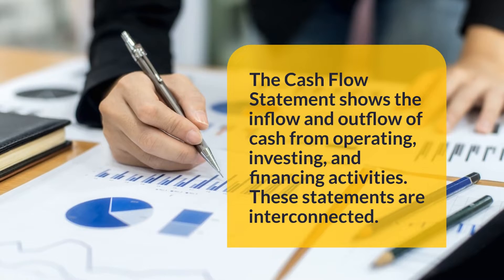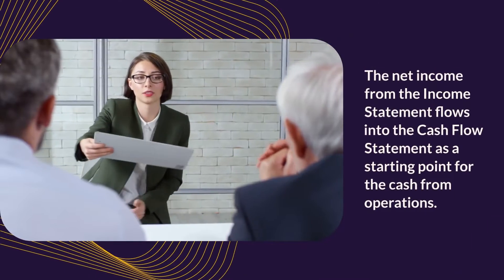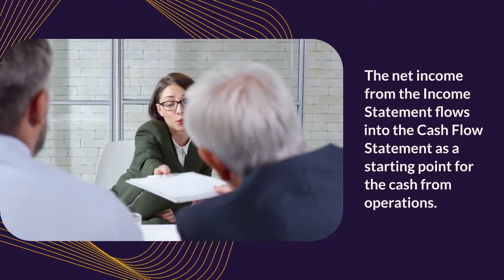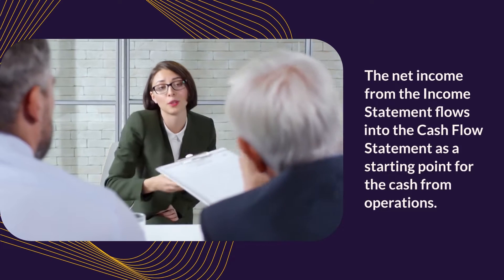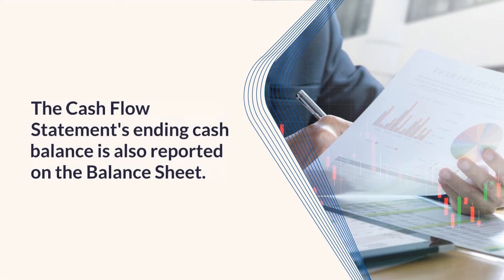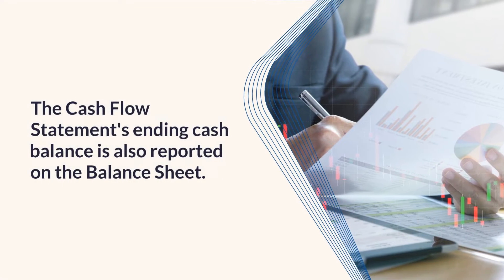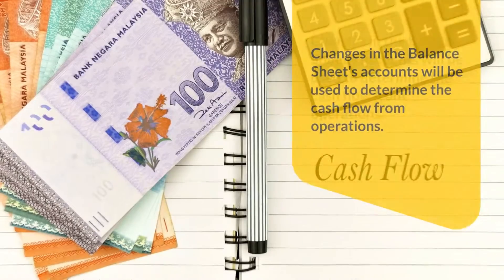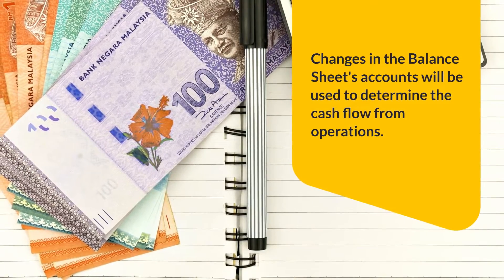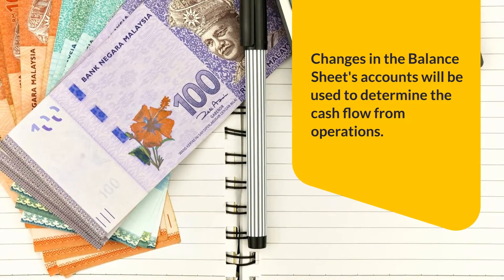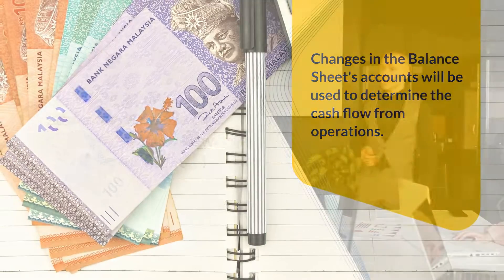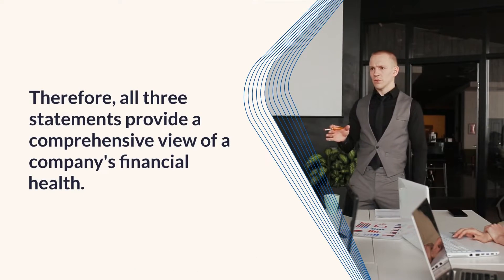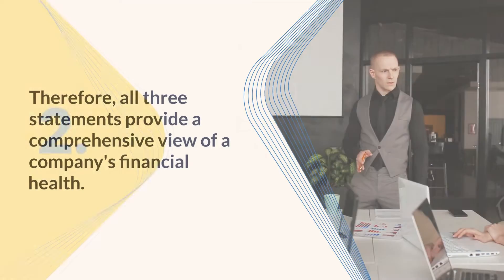These statements are interconnected. The net income from the income statement flows into the cash flow statement as a starting point for cash from operations. The cash flow statement's ending cash balance is also reported on the balance sheet. Changes in the balance sheet's accounts are used to determine cash flow from operations. Therefore, all three statements provide a comprehensive view of a company's financial health.